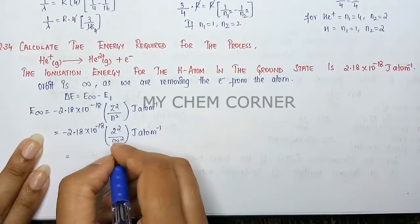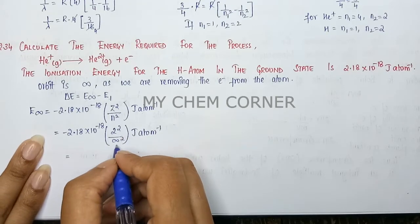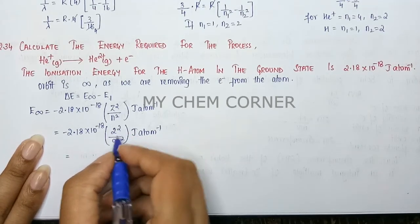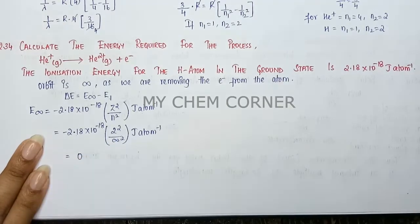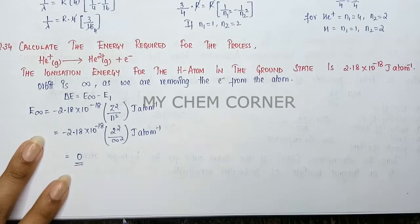When you have anything divided by infinity, the entire value is zero. So when I multiply here, this gives me zero. My answer for E∞ is zero.